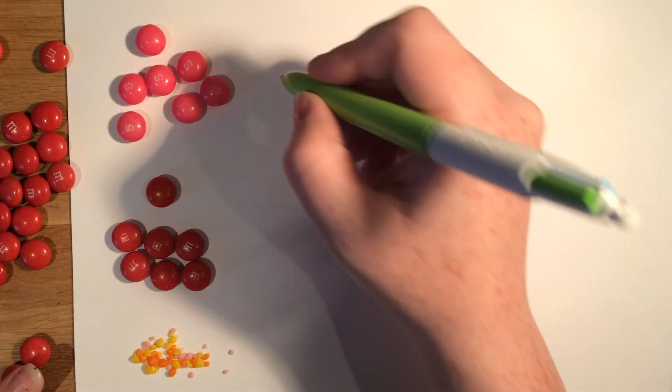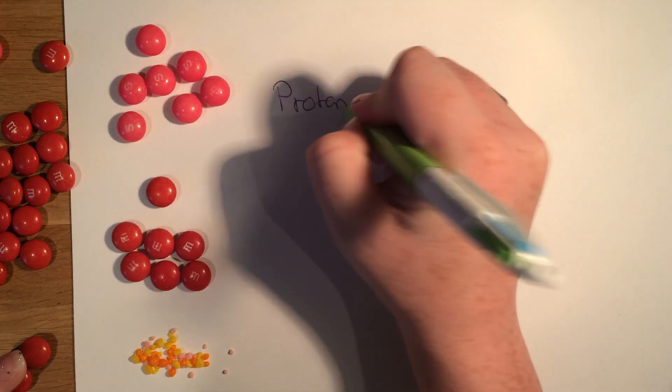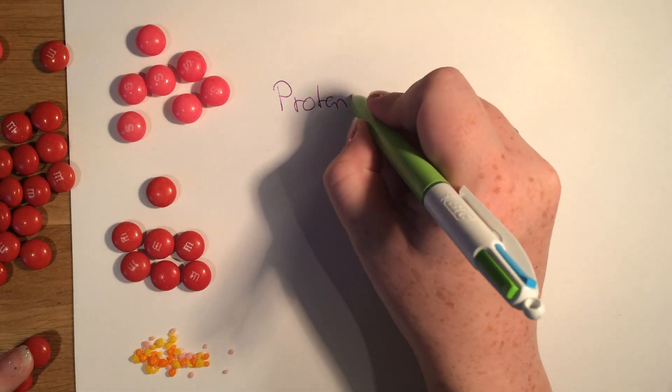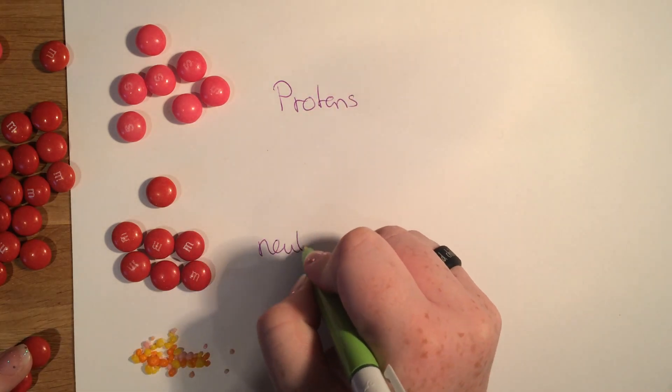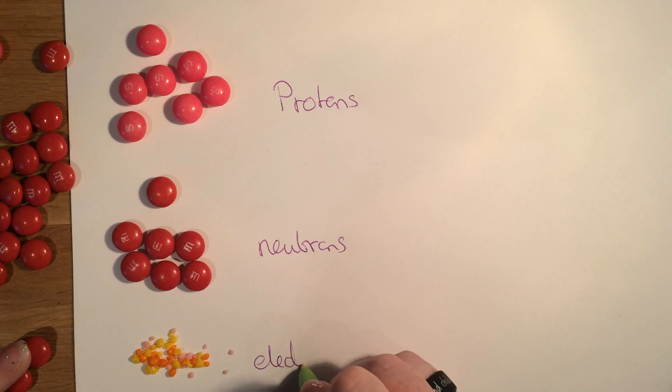There are three important things that you need to be aware of that make up an atom. We have our protons, we have our neutrons, and we have our electrons.